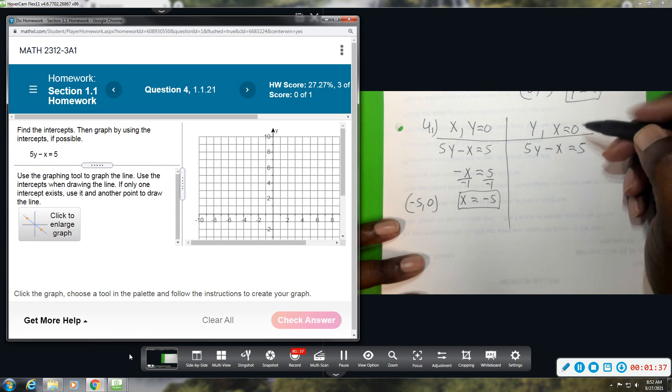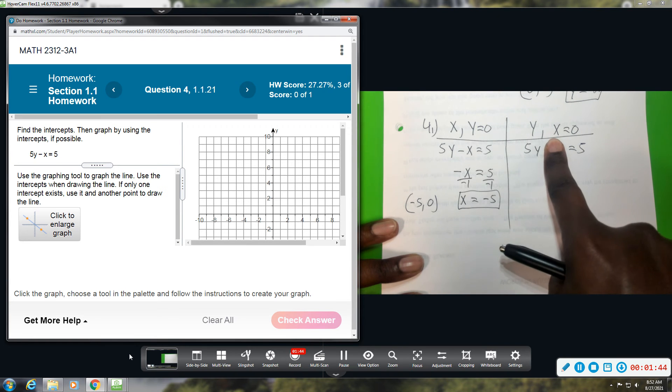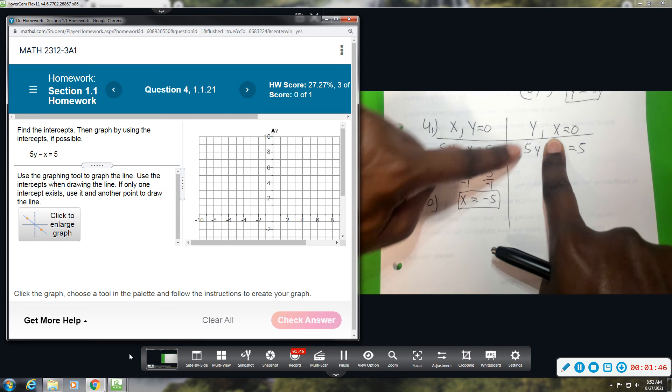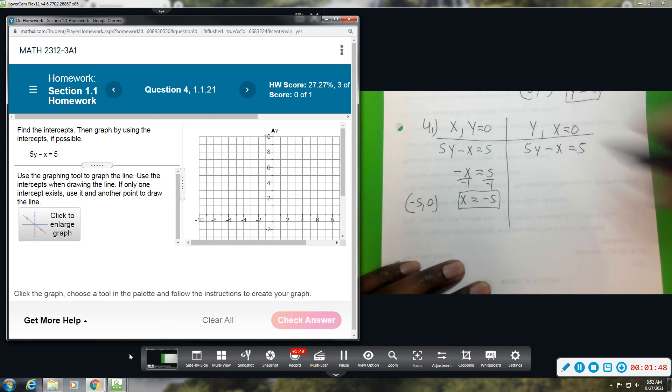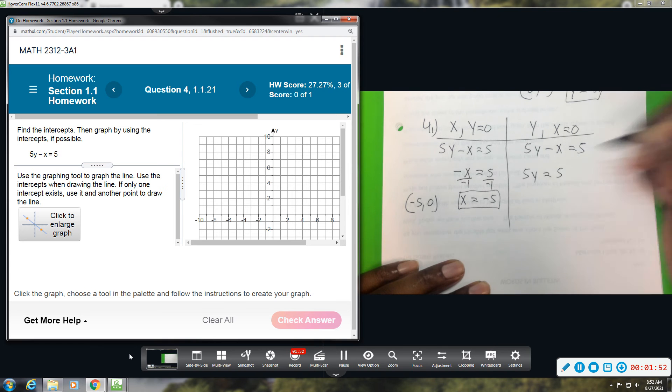Okay, on the y-intercept, same idea. I will plug a zero for x, so I'll just cover it up. So the x term is gone, and we're left with 5y equals 5. So I'm going to start there. 5y equals 5.